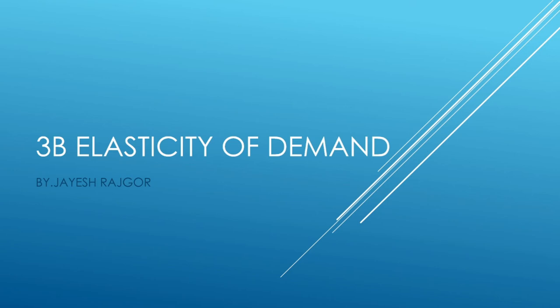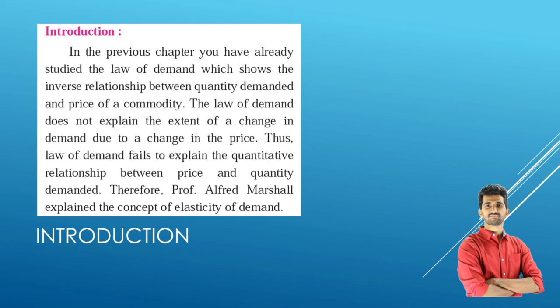The Law of Demand explains the functional relationship between price and quantity demanded. It clearly states that other things being equal, higher the price of a commodity, smaller is the quantity demanded, and lower the price, larger is the quantity demanded — showing an inverse relationship between price and quantity demanded. However, the Law of Demand does not explain the extent of a change in demand due to a change in price.